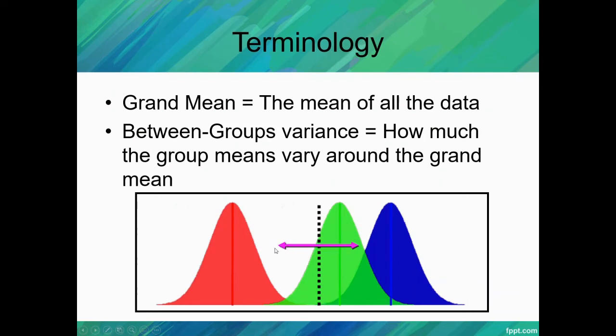And this is the spread for all of the groups combined, and this is when we see the between-groups variance. It's how much the group means vary around the grand mean. So how far away, how much variance does each group have from the grand mean? This is our between-groups variance.